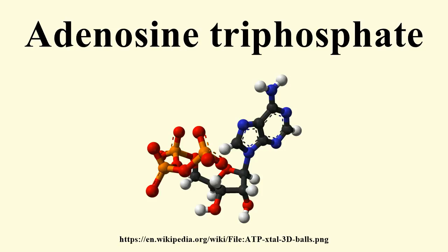A system that is far from equilibrium contains Gibbs free energy and is capable of doing work. Living cells maintain the ratio of ATP to ADP at 10 orders of magnitude from equilibrium, with ATP concentrations five-fold higher than the concentration of ADP. This displacement from equilibrium means that the hydrolysis of ATP in the cell releases a large amount of free energy.